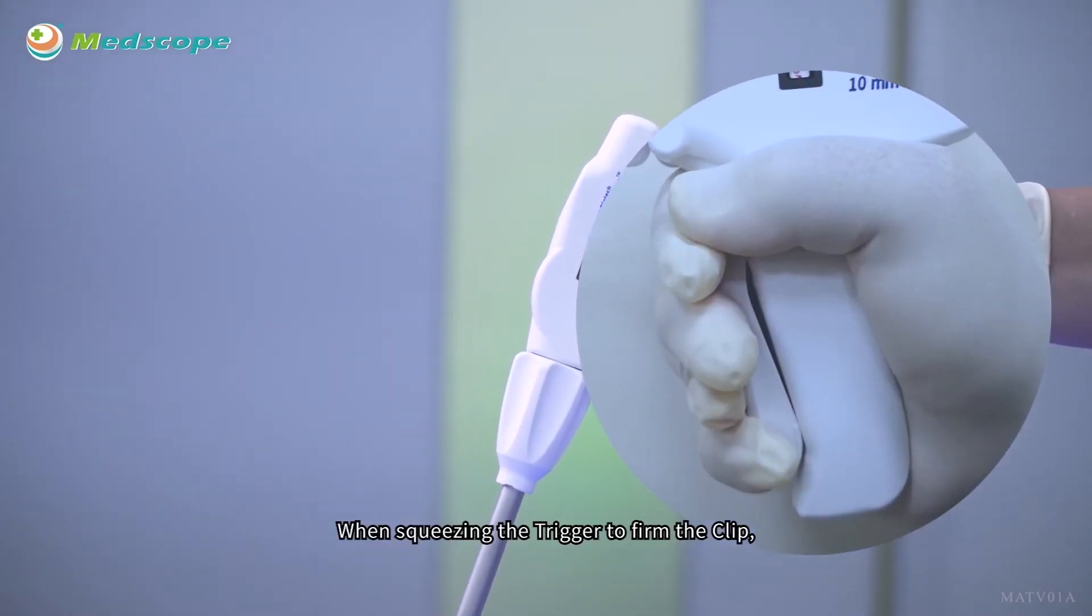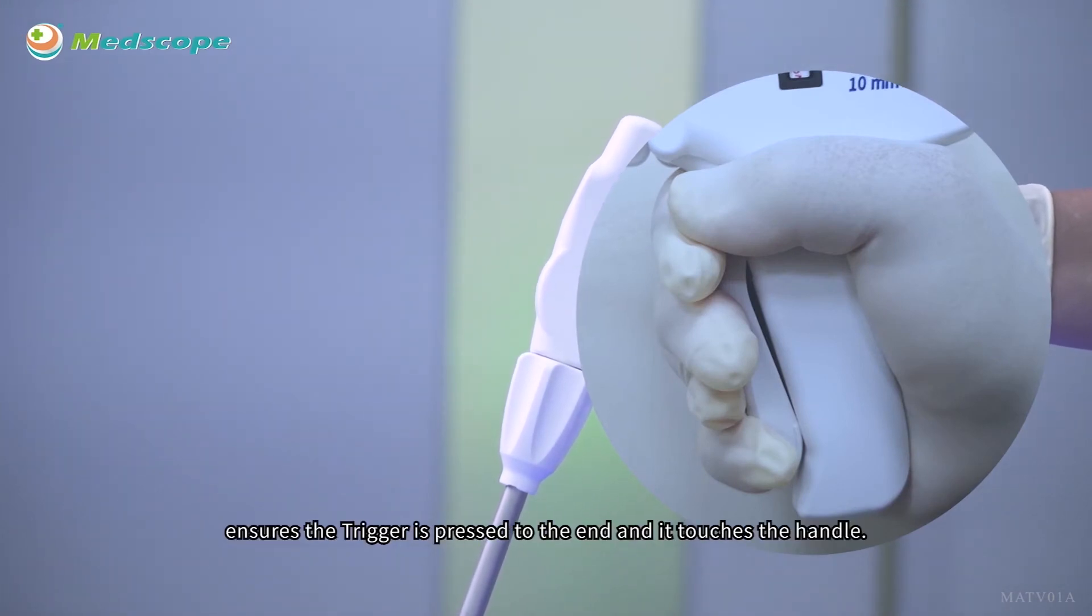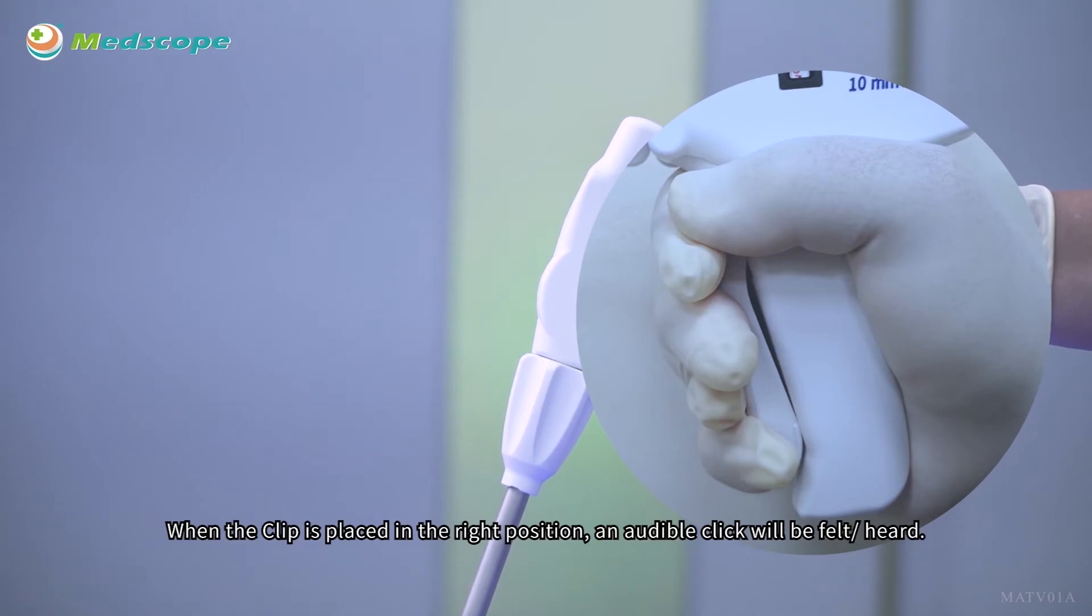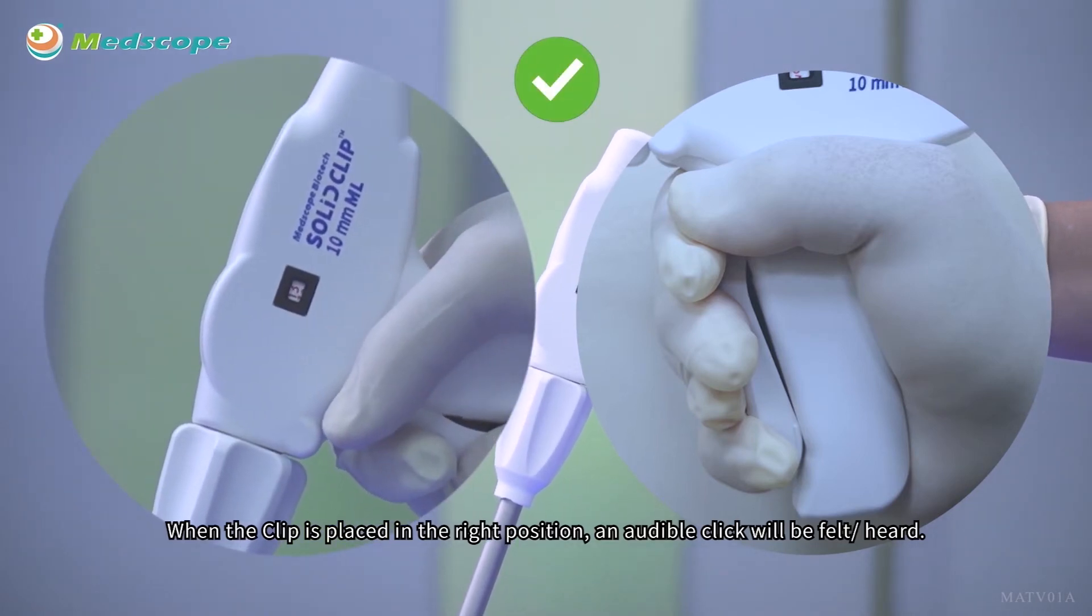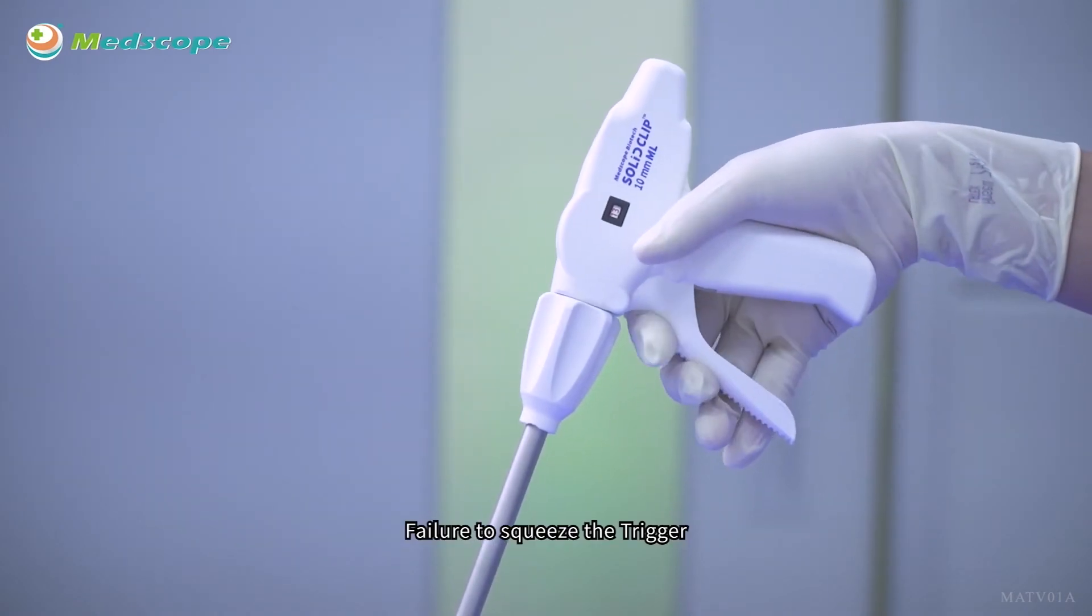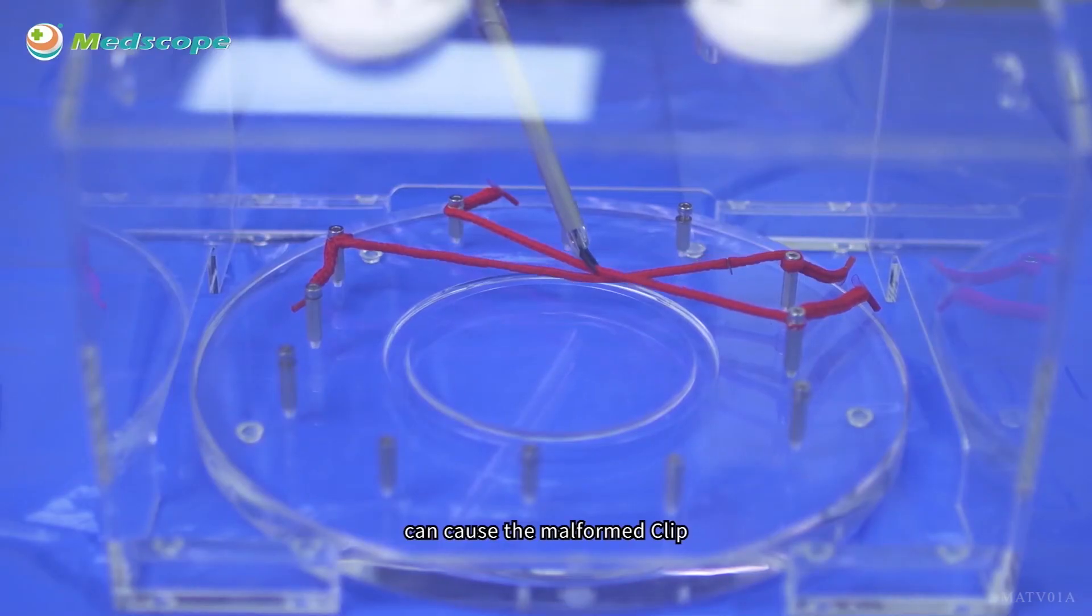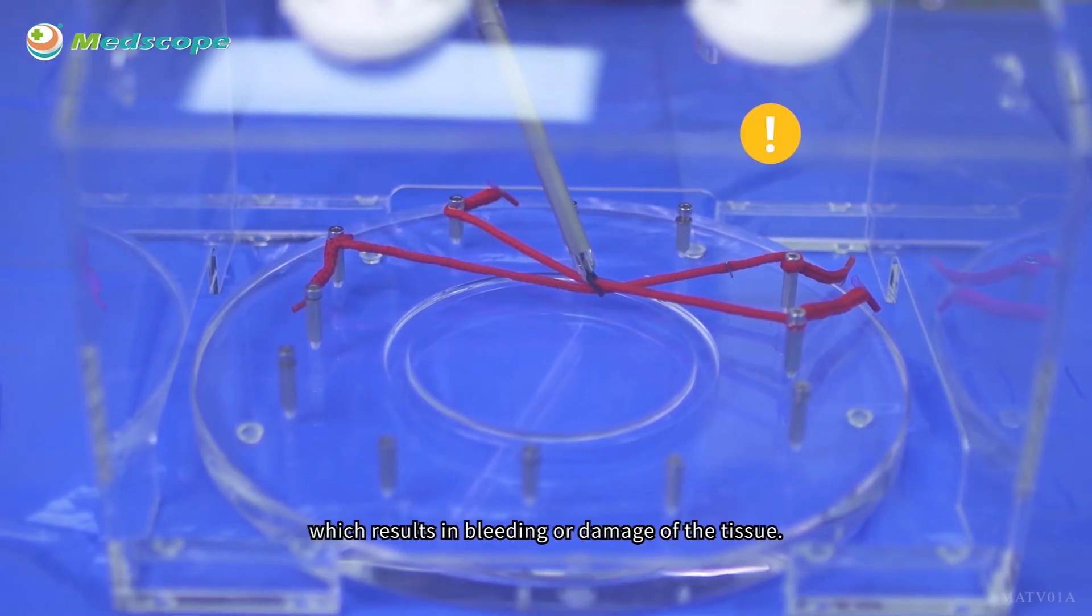When squeezing the trigger to fire the clip, ensure the trigger is pressed to the end and it touches the handle. When the clip is placed in the right position, an audible click will be felt and heard. Failure to squeeze the trigger can cause the malformed clip which results in bleeding or damage of the tissue.